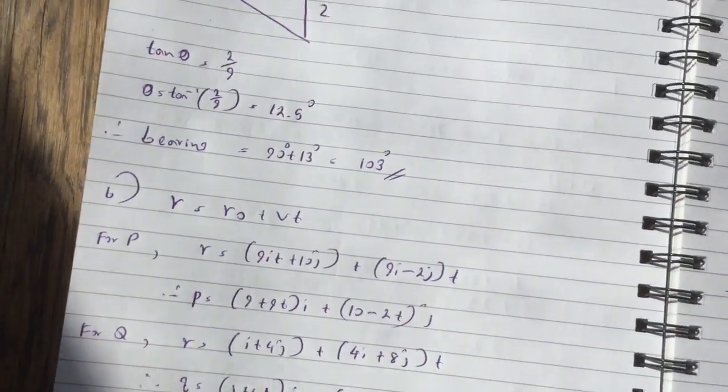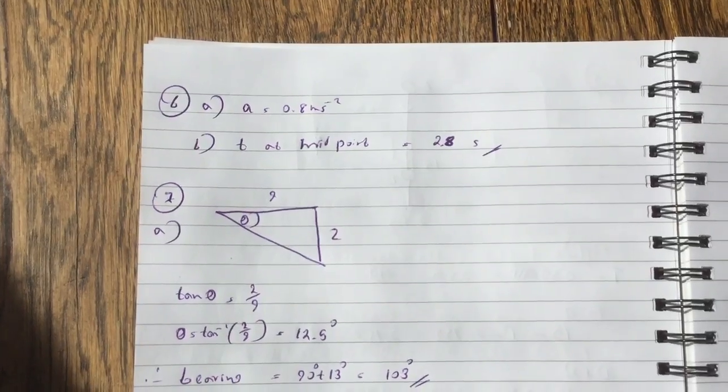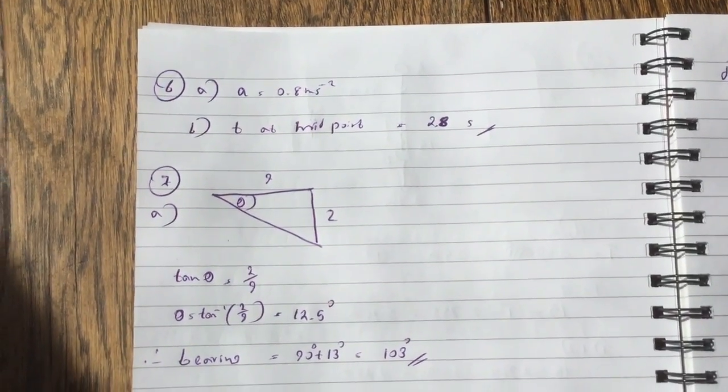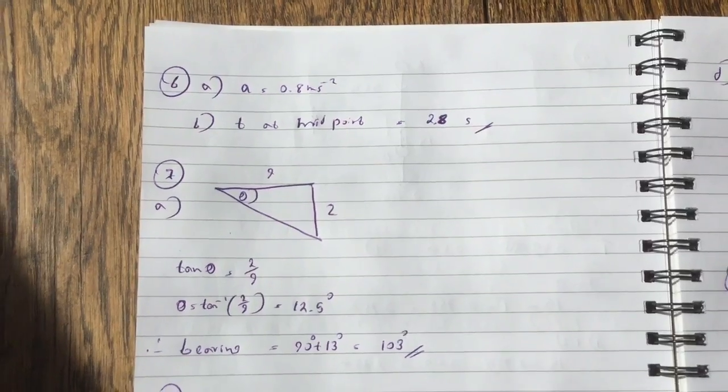Question 6. So acceleration is 0.8 meters per second, and T at midpoint is 2.8 seconds.